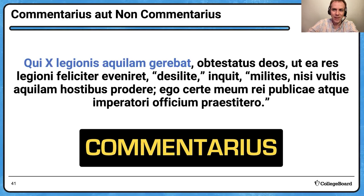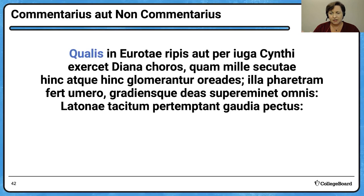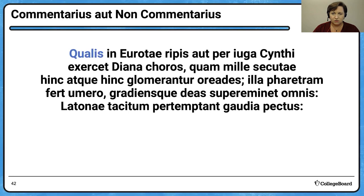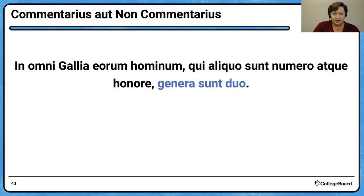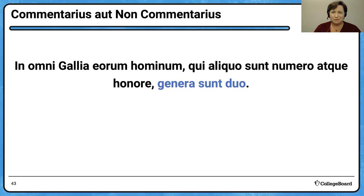Final example: I see 'qualis' — that usually starts a simile. Epic similes — extended similes — are typical of epic poetry. Here we have Diana training her choruses on the banks of the Eurotas river in Sparta, or 'per iuga' — through the ridges of Mount Cynthus. This is comparing Dido to Diana — Virgil likes to link people with alliteration. Epic simile — non-commentarius. And in all Gaul, 'genera sunt duo eorum hominum' — there are two types of these men — descriptions of the culture of other nations: definitely commentarius.